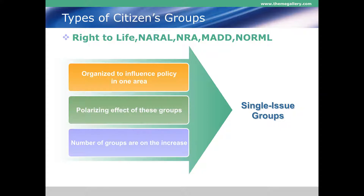Single-issue groups are among the biggest and most powerful groups today. They're organized to influence policy in basically one area, but they are very polarizing because they don't want to compromise at all. Examples include pro-choice versus pro-life groups. The Sierra Club can also function as a single-issue group focused on the environment. Other examples: Right to Life, NARAL — the National Abortion Rights Action League — and the NRA, the National Rifle Association.